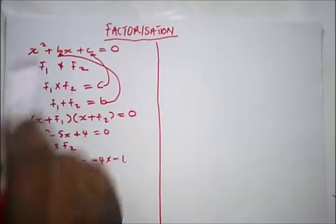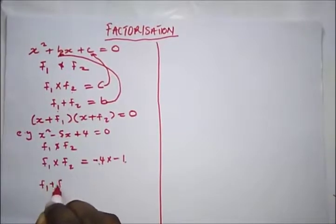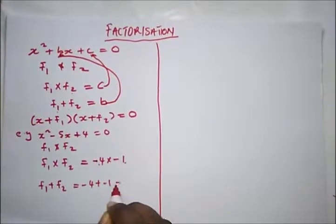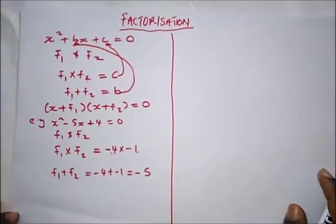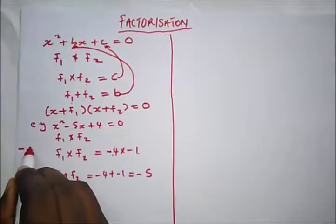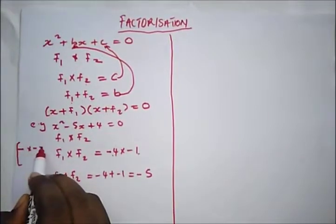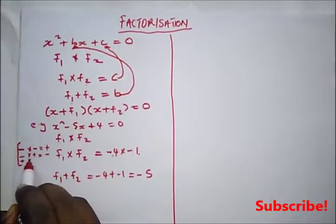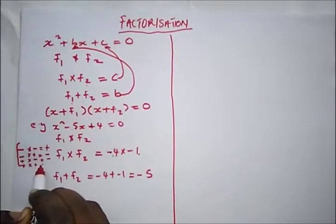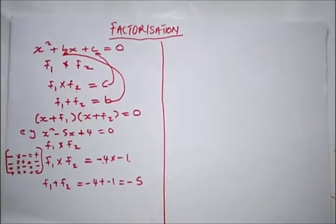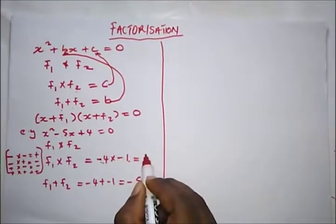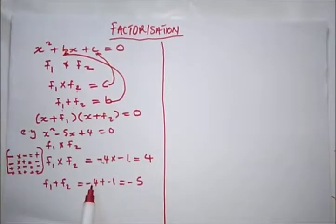We're also keeping in mind that these two factors when added must give us minus 5, which is B. So f1 + f2: minus 4 plus minus 1 gives us minus 5. Note your sign rules: minus times minus gives plus, minus times plus gives minus, plus times minus gives minus, plus times plus gives plus. When we multiply minus 4 times minus 1 we get +4, and when we add minus 4 and minus 1 we get minus 5.